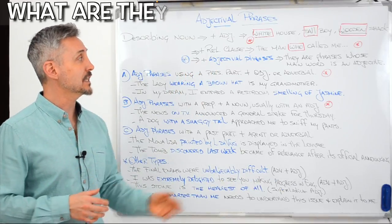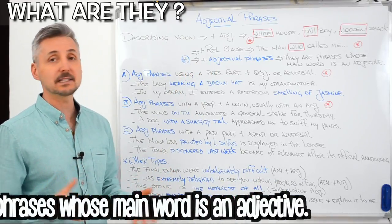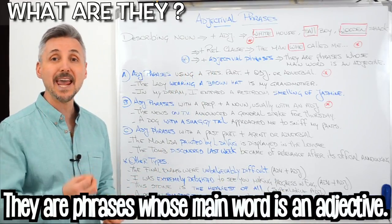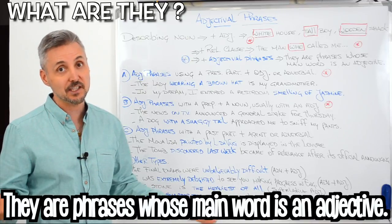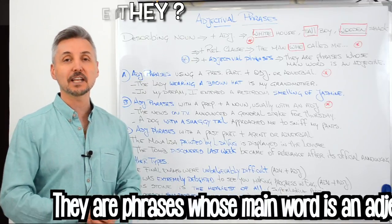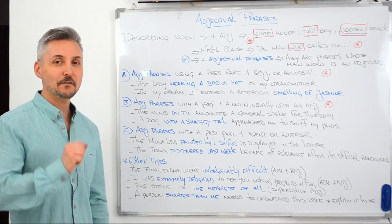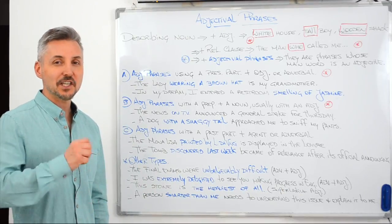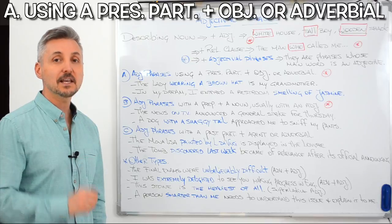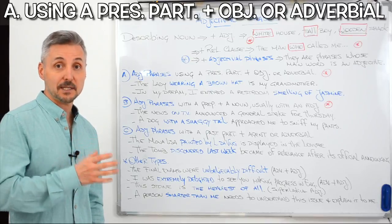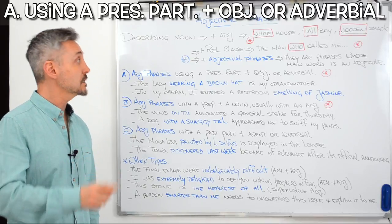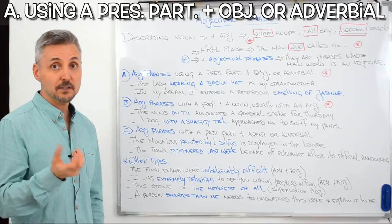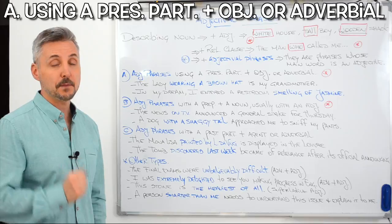Adjectival phrases are phrases whose main word is an adjective, obviously. So, the first group: adjectival phrases using the present participle plus an object or adverbial.